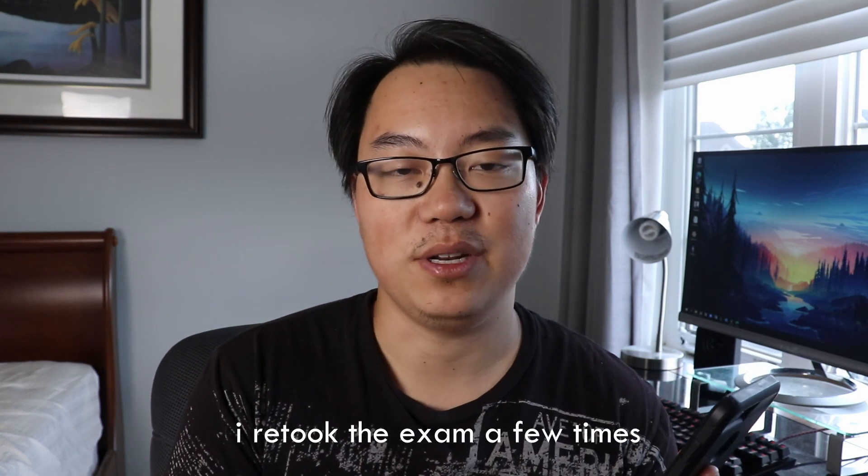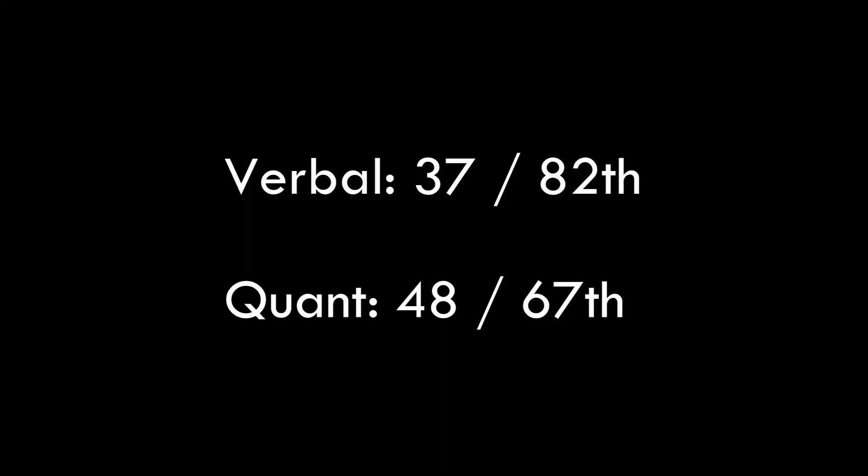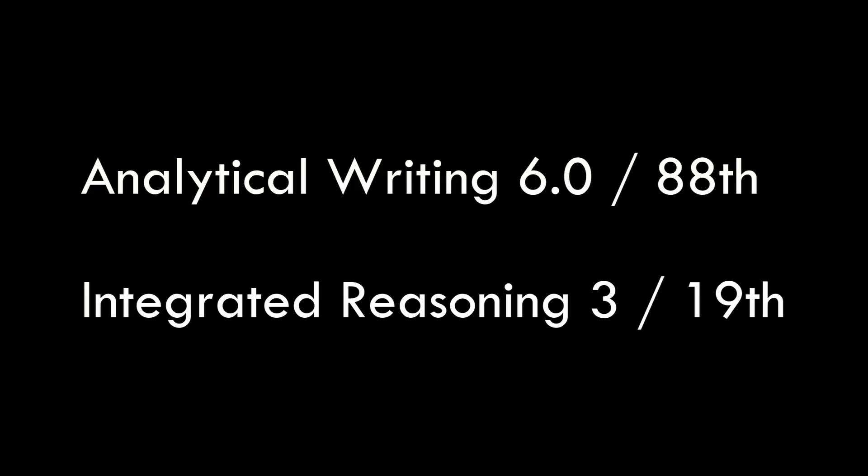I'm going to share the best GMAT score that I submitted for my PhD application. I got a total score of 700, which is the 80th percentile. Breaking that up into verbal and quantitative: 37 for verbal and 48 for quant. For the other two components, I got a 6 for analytical writing and a 3 for integrated reasoning. I'm not really sure how I got such a low score for integrated reasoning — I think because it was the last section, my brain was exhausted and I was just clicking whatever answers I could find to get out of that exam center. But overall the score is pretty competitive — I hit that 700.